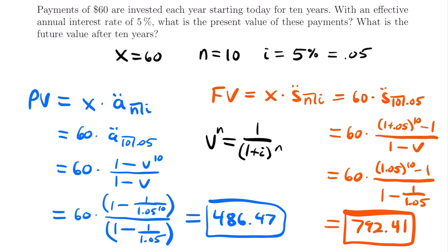Now you know how to calculate the present value and the future value for an annuity due — a series of payments being made at the beginning of a payment period rather than at the end. That's really the only difference between annuity immediate and annuity due, and we have different formulas for each scenario. If you want to see more example problems, check out the examples video linked at the end and in the description below. Feel free to leave any questions in the comments — I'll see you next time.